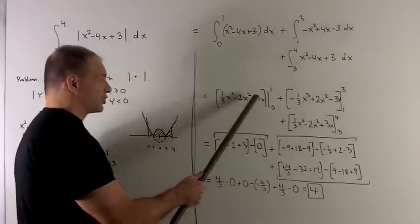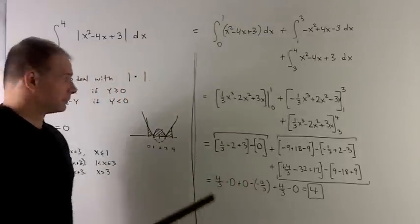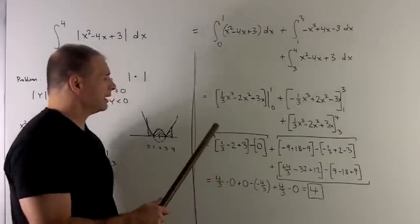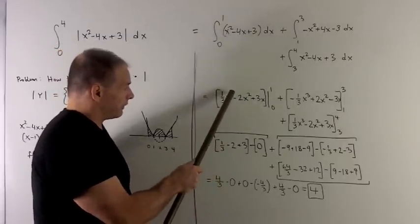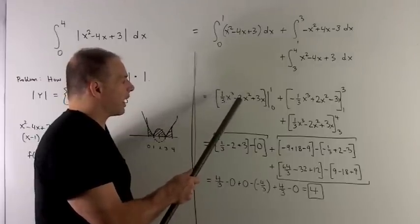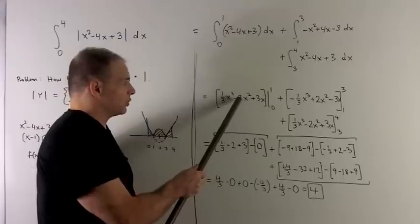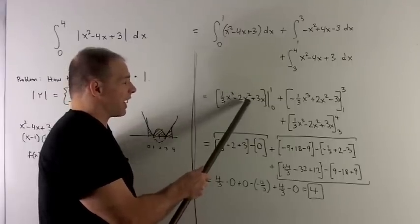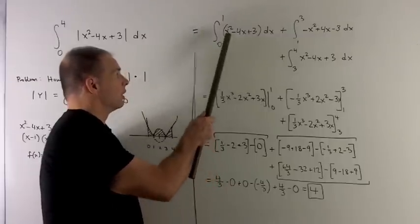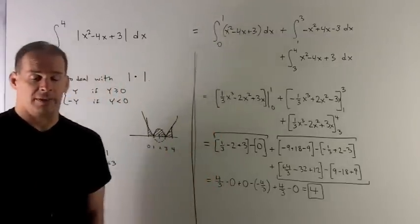We can check our answers by taking the derivative. If I take the derivative of this, I better get x squared minus 4x plus 3. So derivative of this says bring the 3 down, drop the exponent by 1, gives me x squared. This says drop the 2 down, drop the exponent by 1, gives me minus 4x. And then derivative of 3x is just going to be 3, so we know we have the correct derivative here.